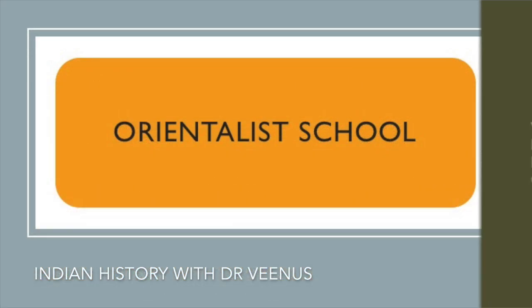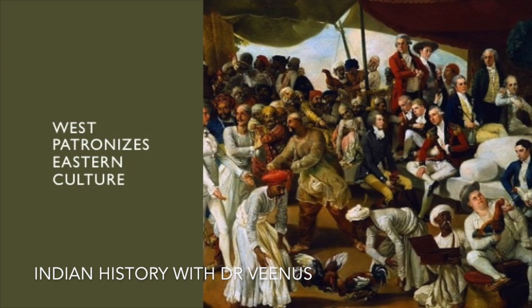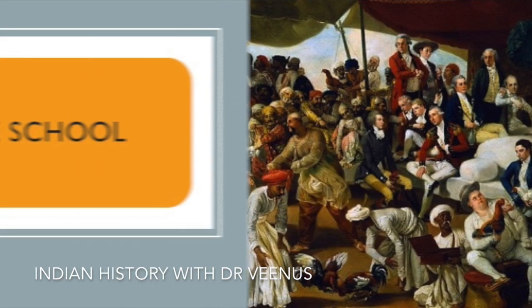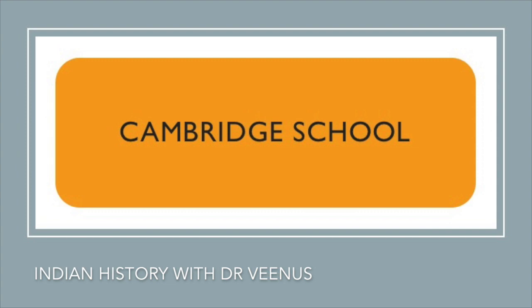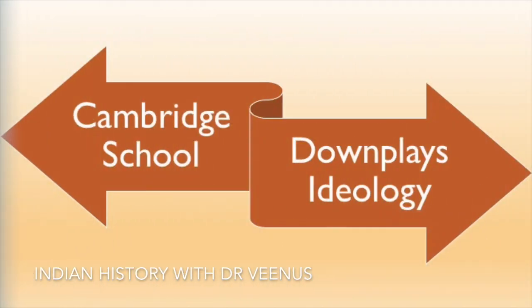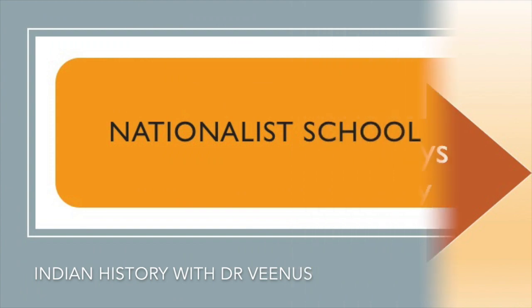Orientalist school: This is a school of thought wherein the West is patronizing the East culture. Cambridge school: The Cambridge school is a school of thought which downplays ideology.